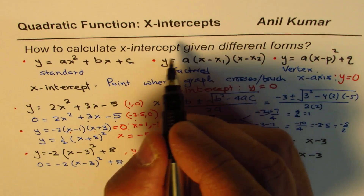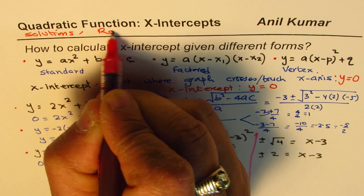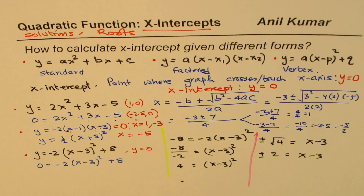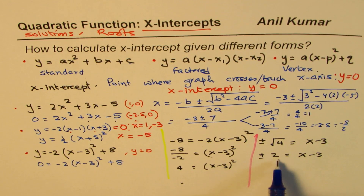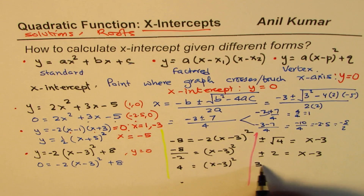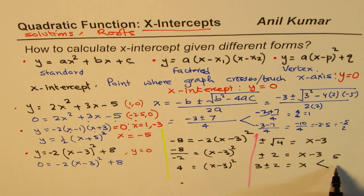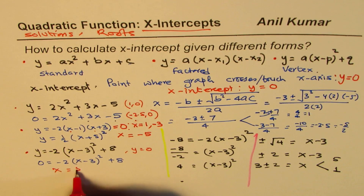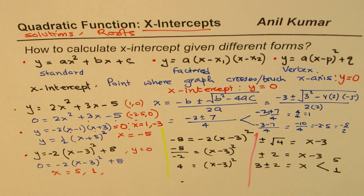X-intercepts are also called solutions or roots — same thing with a minor difference not being discussed here. Rearranging, x equals 3 plus or minus 2. Adding 2 gives x equals 5, and subtracting 2 gives x equals 1. So for this equation we get two x-intercepts at x equals 5 and x equals 1. That is how you find x-intercepts when quadratic functions are given in three different forms: standard, factored, and vertex.